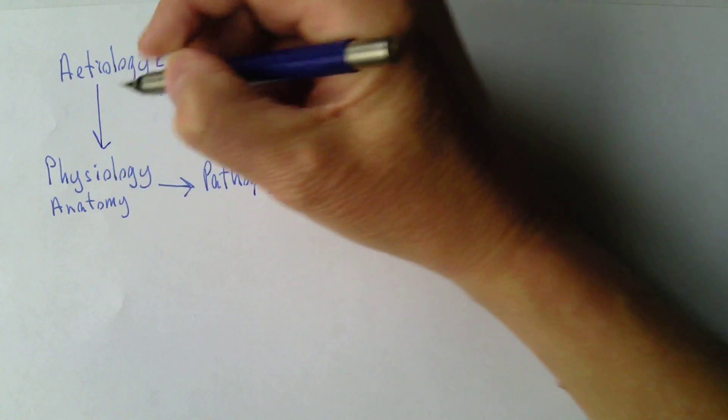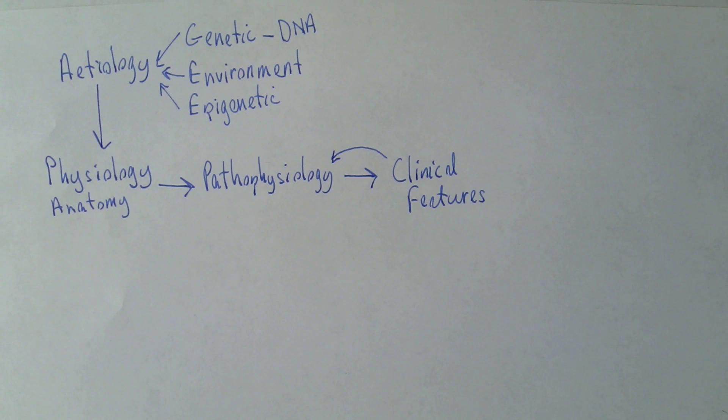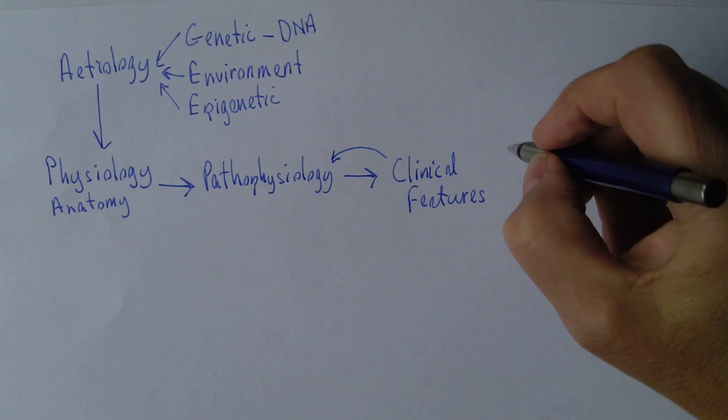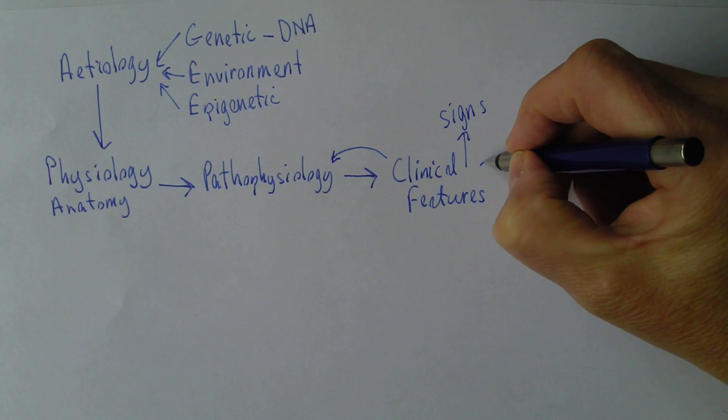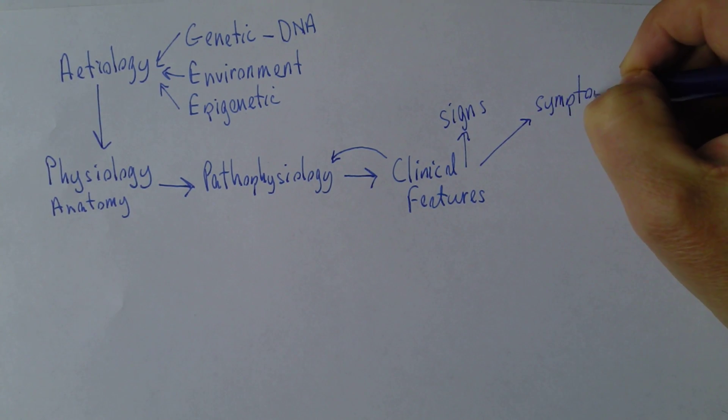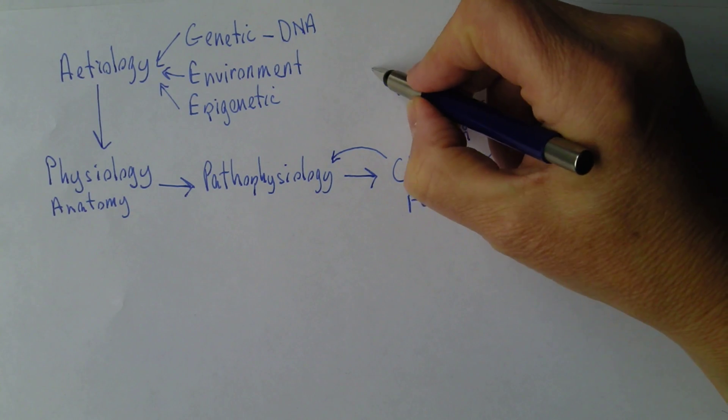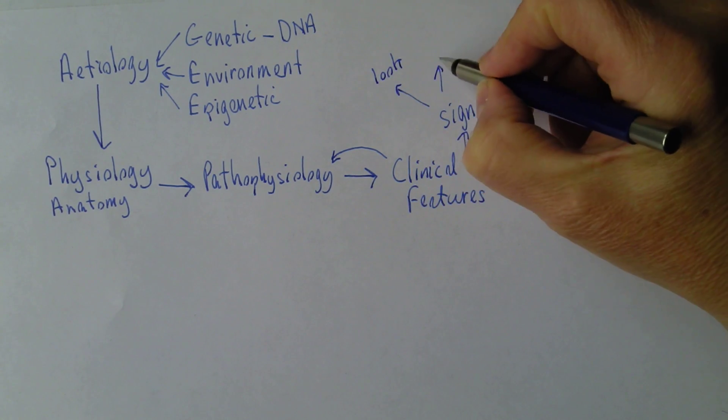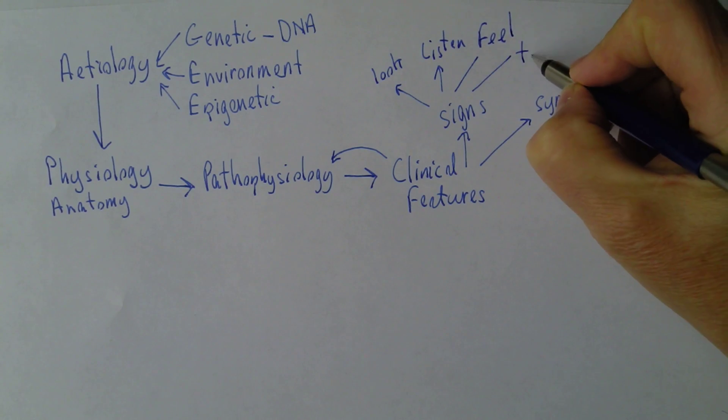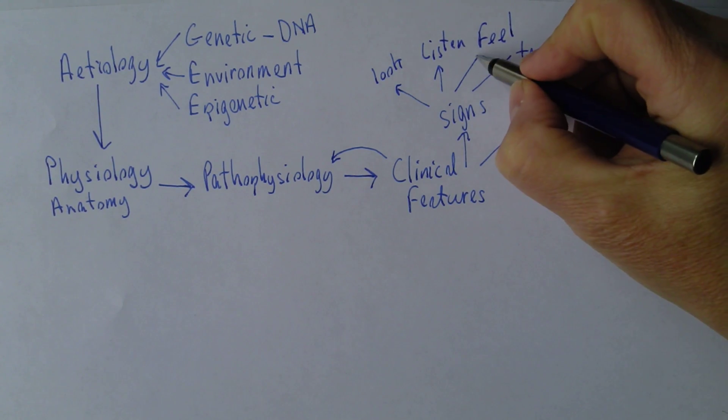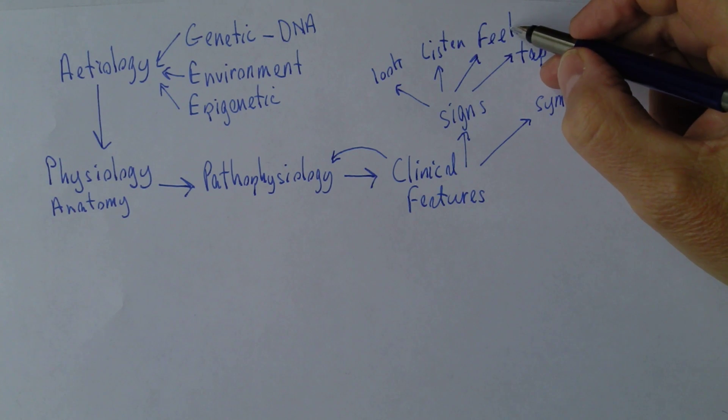Now how do we know what clinical features have occurred? Well there can be signs or there can be symptoms. A sign is something physical that you see. So if you want to know if there's a sign you would look, or you would listen, or you would feel, or you would tap. These are the classic methods of investigation of clinical signs: observation, auscultation, palpation and percussion.